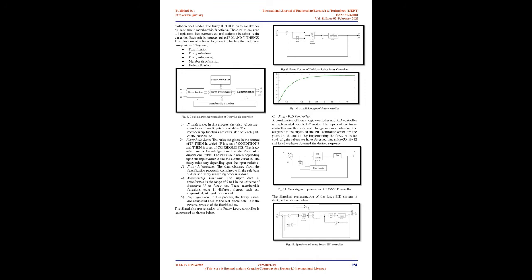Mathematical model: The fuzzy if-then rules are defined by continuous membership functions. These rules are used to implement the necessary control action to be taken by the variables. Each rule is represented as if x and y then z. The structure of a fuzzy logic controller has the following components: Fuzzification, Fuzzy rule base, Fuzzy inferencing, Membership function, and Defuzzification. Figure 8 shows the block diagram representation of fuzzy logic controller.